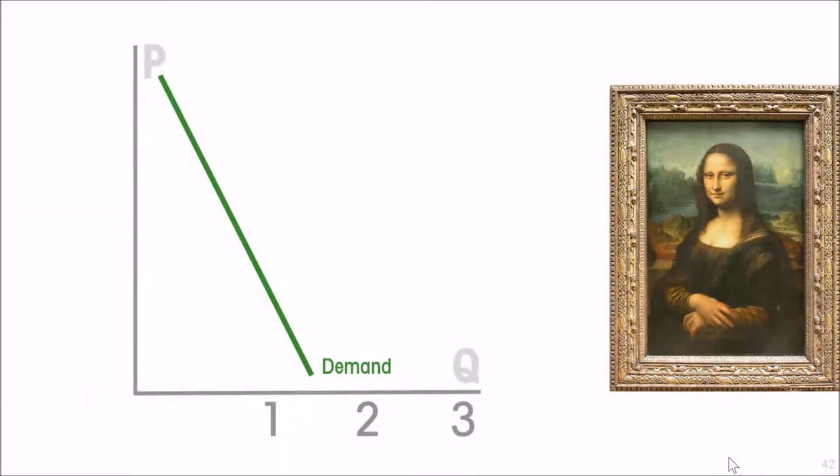What about the supply curve? The supply curve for the Mona Lisa is not upward sloping as we would expect. It is perfectly inelastic—a vertical straight line at one, because there is only one Mona Lisa. If you visit the museum where it's displayed, you'll frequently see amateur and professional artists painting copies, but that doesn't increase the supply. The Mona Lisa is Leonardo da Vinci's original, and